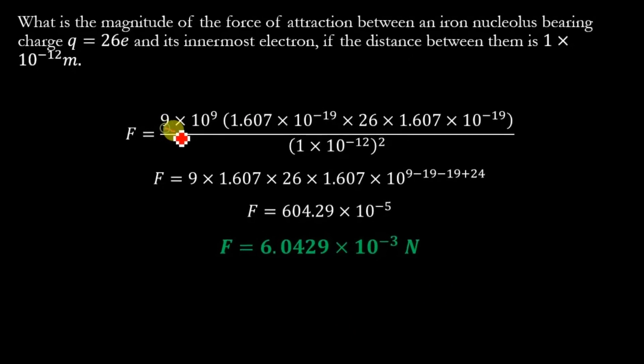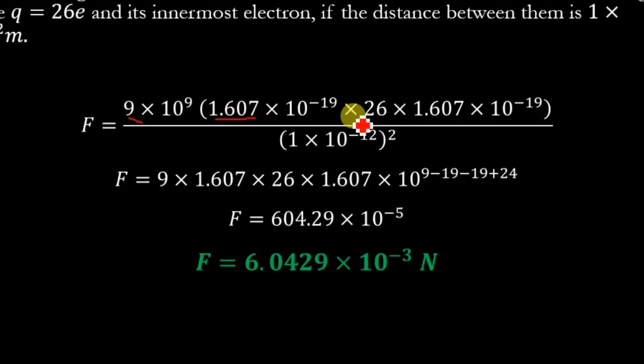Now 9 × 1.607 × 26 × 1.607, multiply these terms by 10^9 × 10^-19 × 10^-19, while this 12 when squared gives 10^-24. Shifting this -24 from denominator to numerator, it becomes +24.